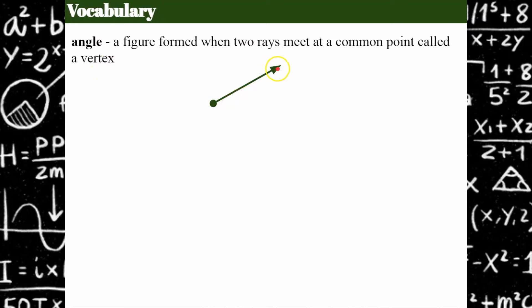So ray one, my point, and ray two. So here is my angle.